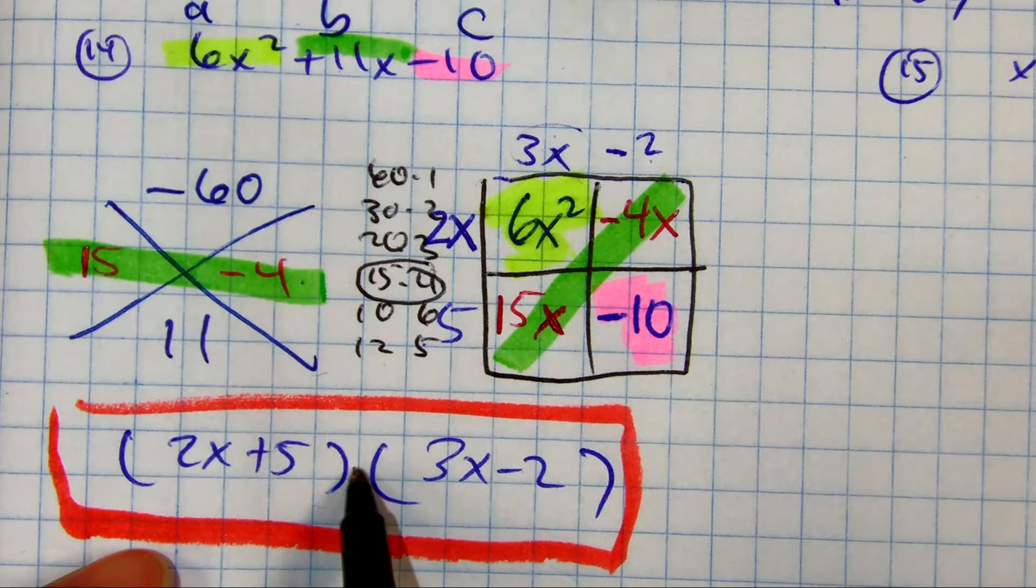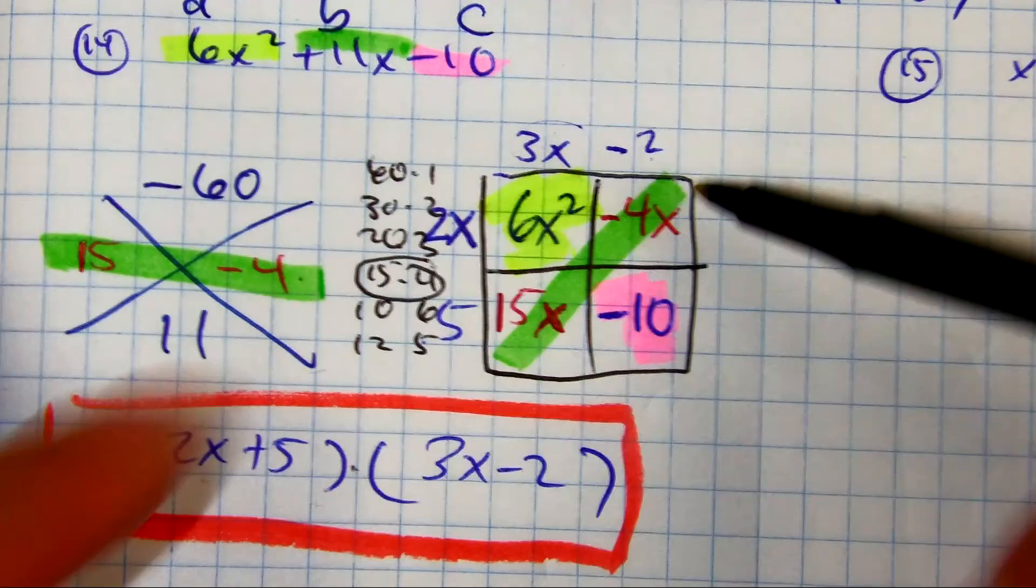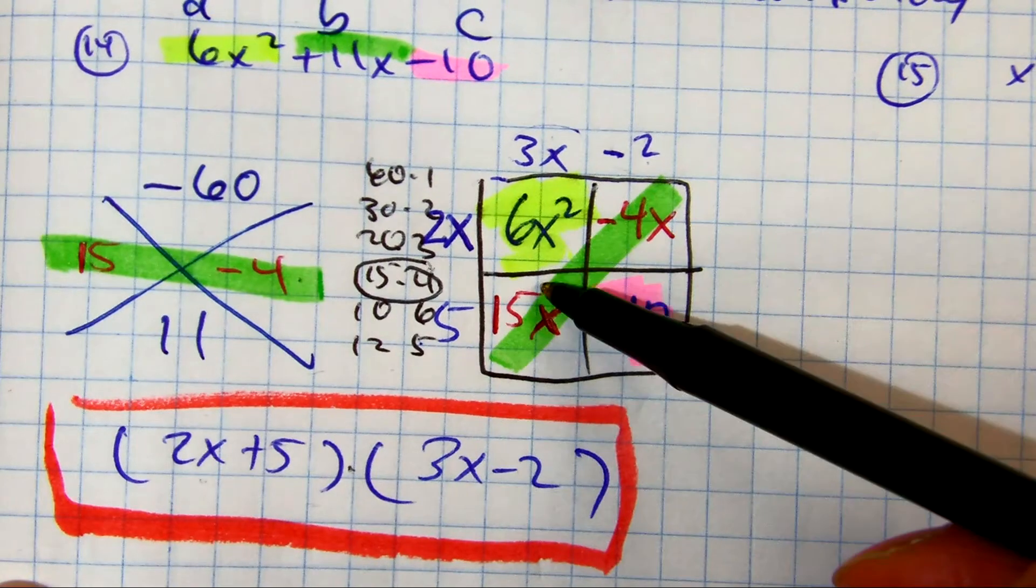So this is multiplication. I'd put that on the outside of the box. Multiply, then combine like terms and you get the original problem.